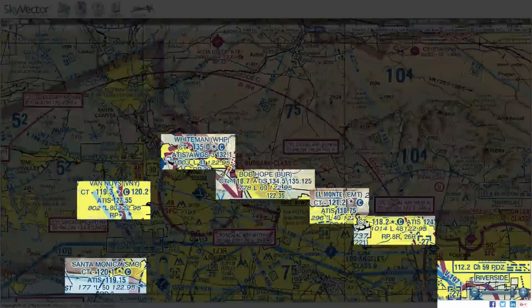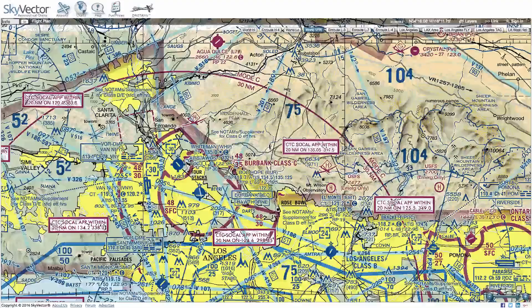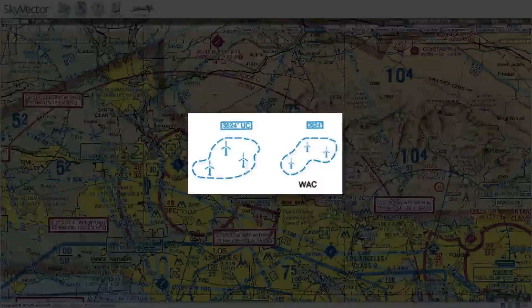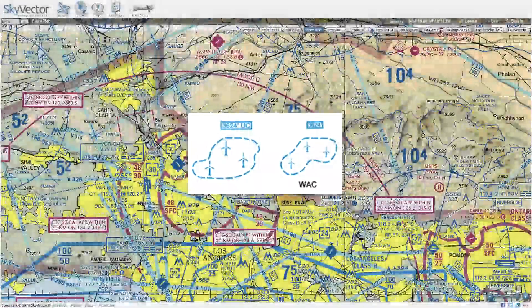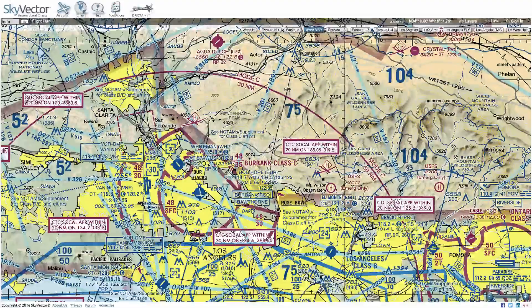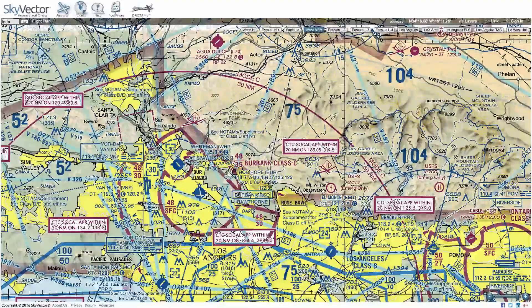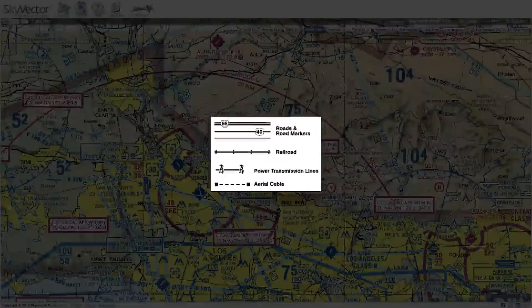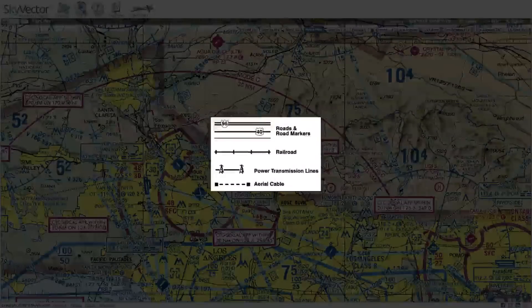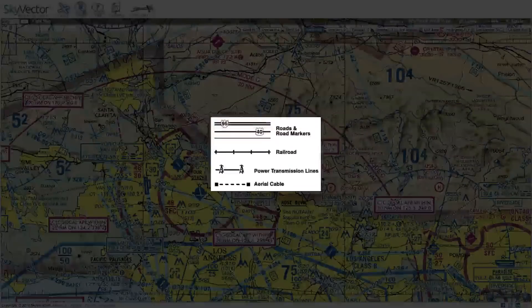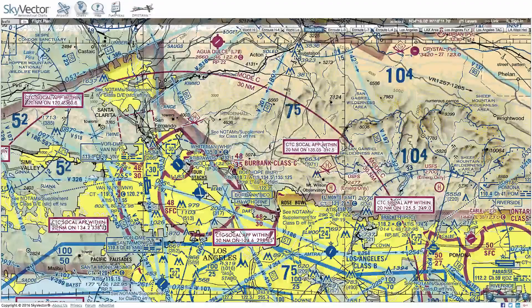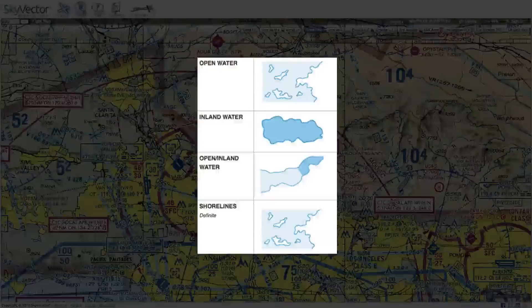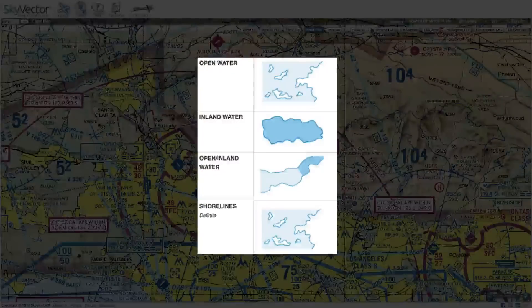A couple of other things: we'll have wind turbines with the highest wind turbine listed — generally in MSL, but occasionally in AGL, and occasionally listed as UC for under construction. We'll also have railroads, normal roads, road markers, bridges, piers, tunnels, power transmission and telecommunication lines, and different types of water notated whether it's open or closed.